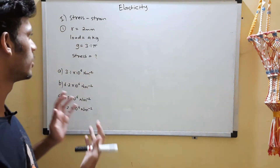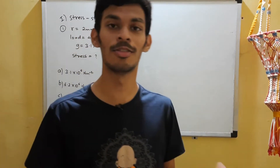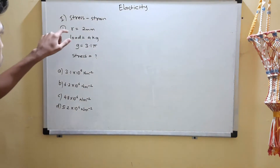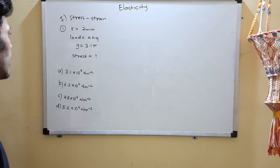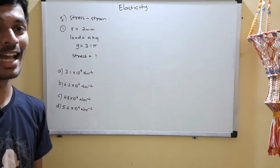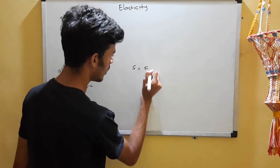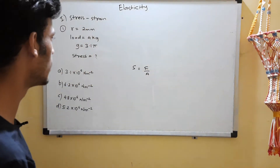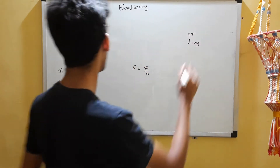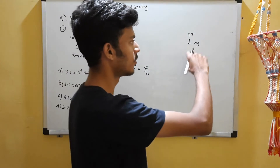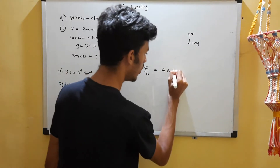Let's begin with our first topic, stress and strain. Here's a warm-up formula-based question. The radius of a wire is given, we'll hang a 4 kg load on it, and g is taken as 3.1π. We need to find the stress on that wire. Stress is restoring force per unit area, and the restoring force is simply the tension, which equals mg - so 4 times g, which is 3.1π.